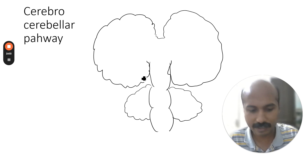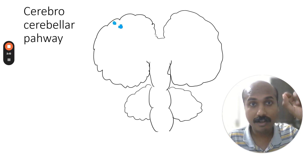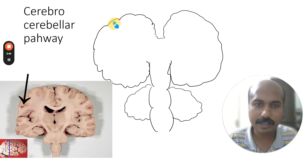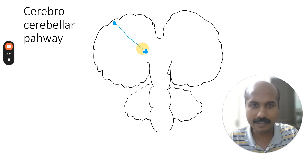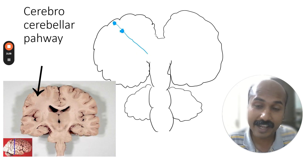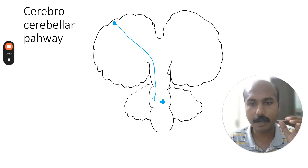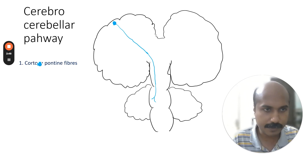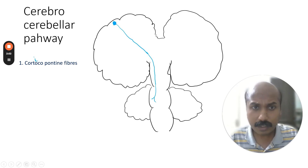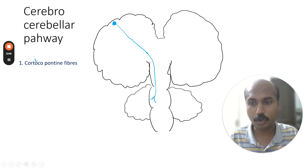Now I will draw in the cerebral cortex, which is the outer gray matter of the cerebrum. From the cell body of a neuron in the cerebral cortex, an axon projects downward into the white matter — through the corona radiata, then the internal capsule, descending through the crus cerebri of the midbrain, and ending in the basilar part of the pons. This neuron is called the corticopontine neuron.